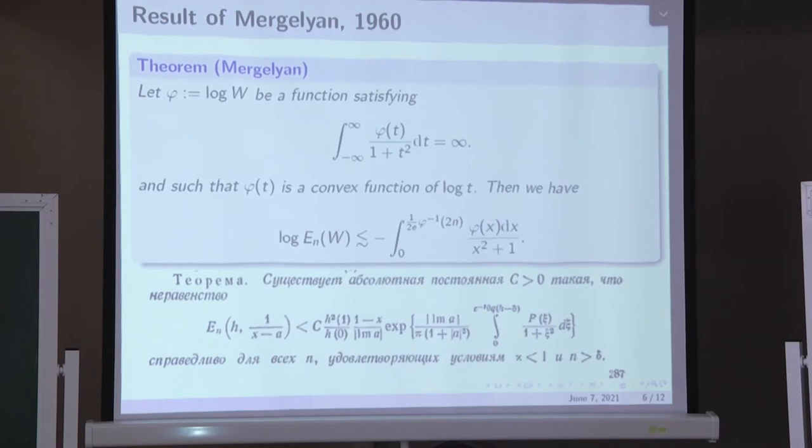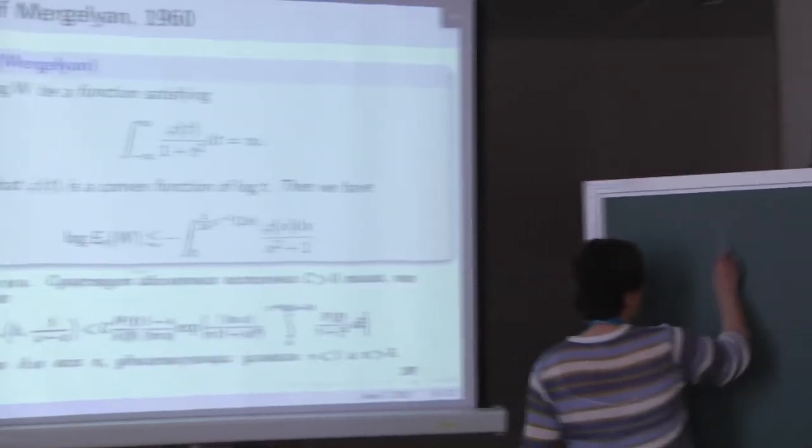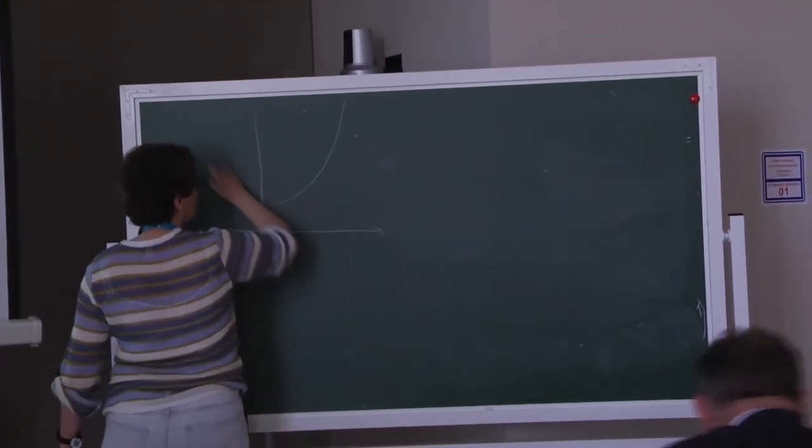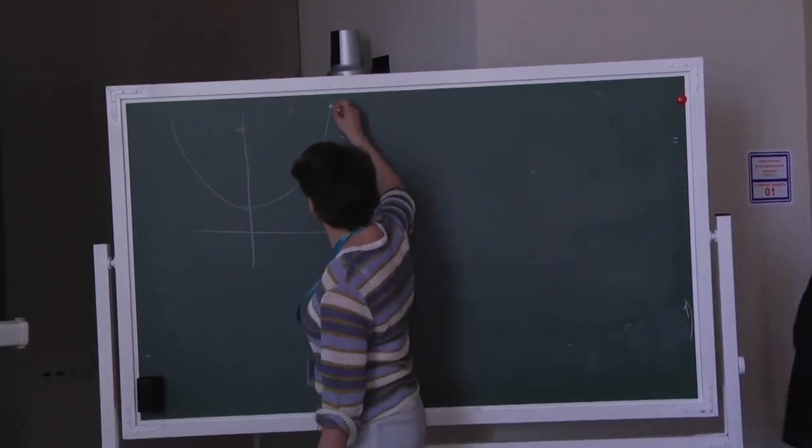So we minimize here this norm under the condition that value at the point i is one. If we look at this condition and look at the definition of the function ω(z), we can see that here is the reverse situation. We're searching for supremum of P(i) under the condition that P of, here I wrote that on the blackboard also, is bounded. So it's the dual problems. And for example, this thing will tend to one over ω(i). So if we know from Mergelyan's theorem that ω(i) is infinity, we suppose that polynomials are dense, then here, of course, it will be zero at the limit when n tends to infinity. So it's the main question. And now I again recall another result of Mergelyan. It's from 1960. I'll fix the notation. We will denote by φ logarithm of W.